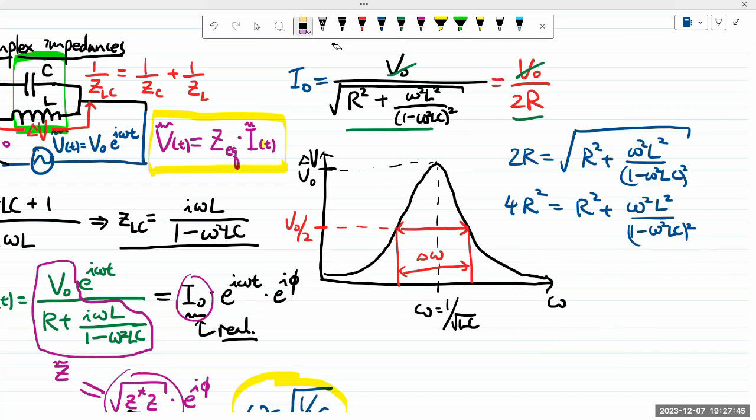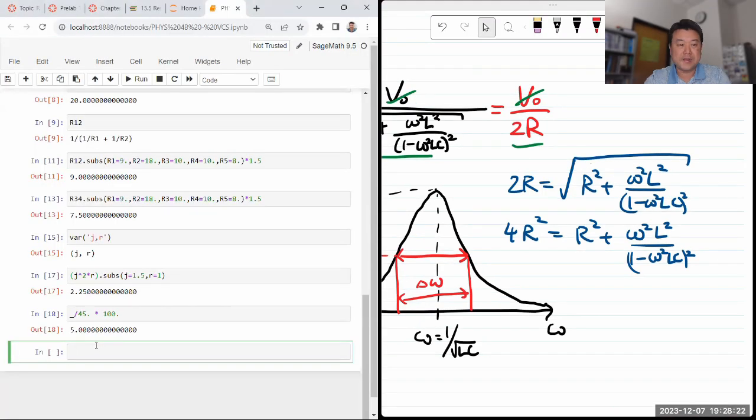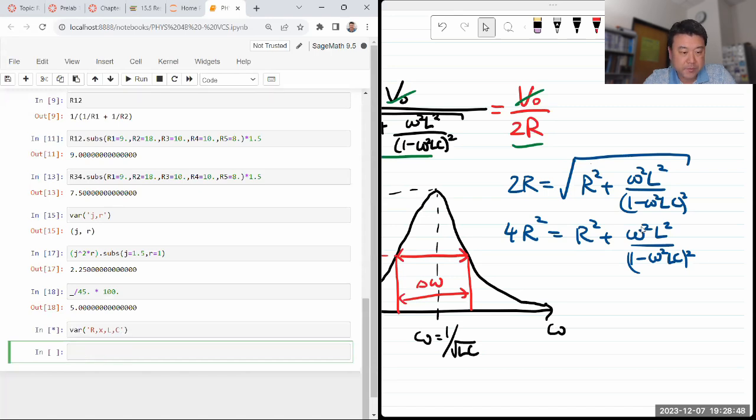And instead of doing this algebra by hand, let's use SageMath. So let's declare some variables. We're going to be using R, omega, let me call it omega squared because I want to treat this omega squared as like X. So let me just define that as X and I'll just put in X where I see omega squared.